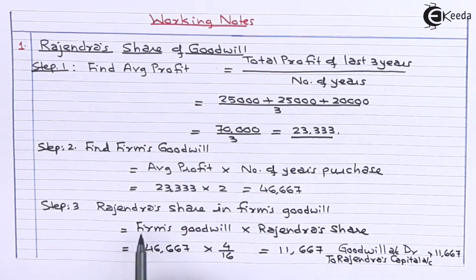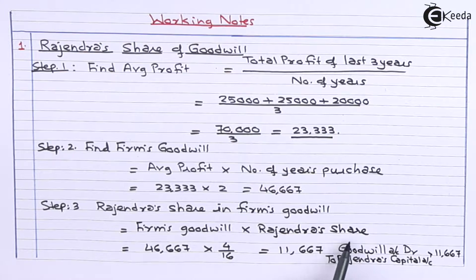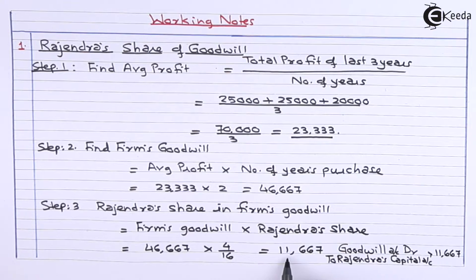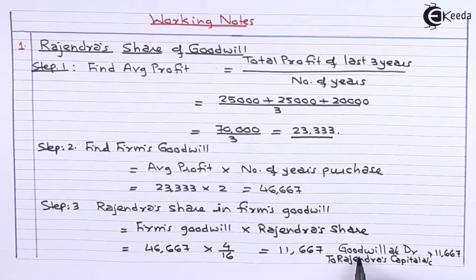Step 3: Rajendra's share in firm's goodwill = total goodwill × Rajendra's share = 46,667 × 4/16 = 11,667. The journal entry for this will be: Goodwill Account debit, to Rajendra's Capital Account 11,667.